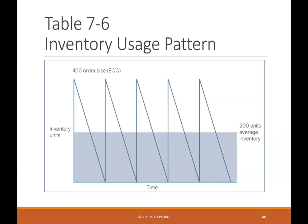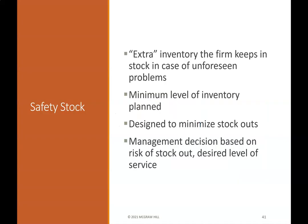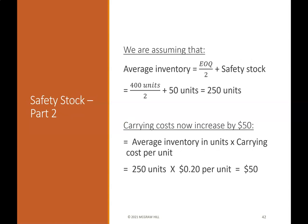Table 7-6 shows the inventory usage pattern. Safety stock is extra inventory the firm keeps in stock in case of unforeseen problems, representing the minimum level of inventory planned. It is designed to minimize stockouts and is a management decision based on risk of stockout and the desirable level of service. Assuming average inventory equals EOQ/2 plus safety stock: 400/2 + 50 = 250 units. Carrying costs now increase by $50, equal to average inventory in units times carrying costs per unit: 250 units × $0.20 per unit = $50.